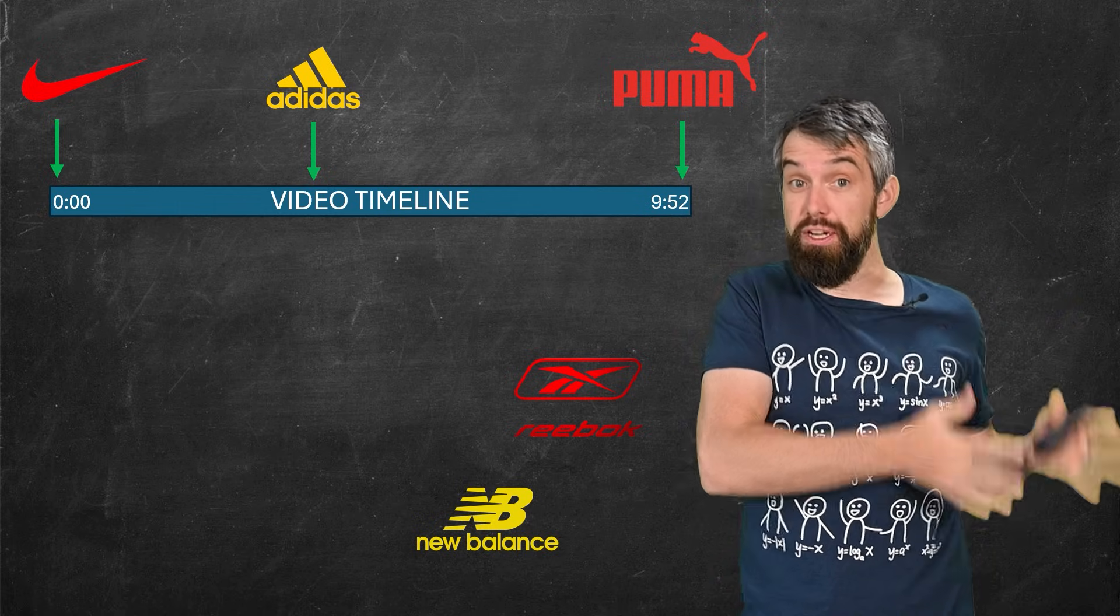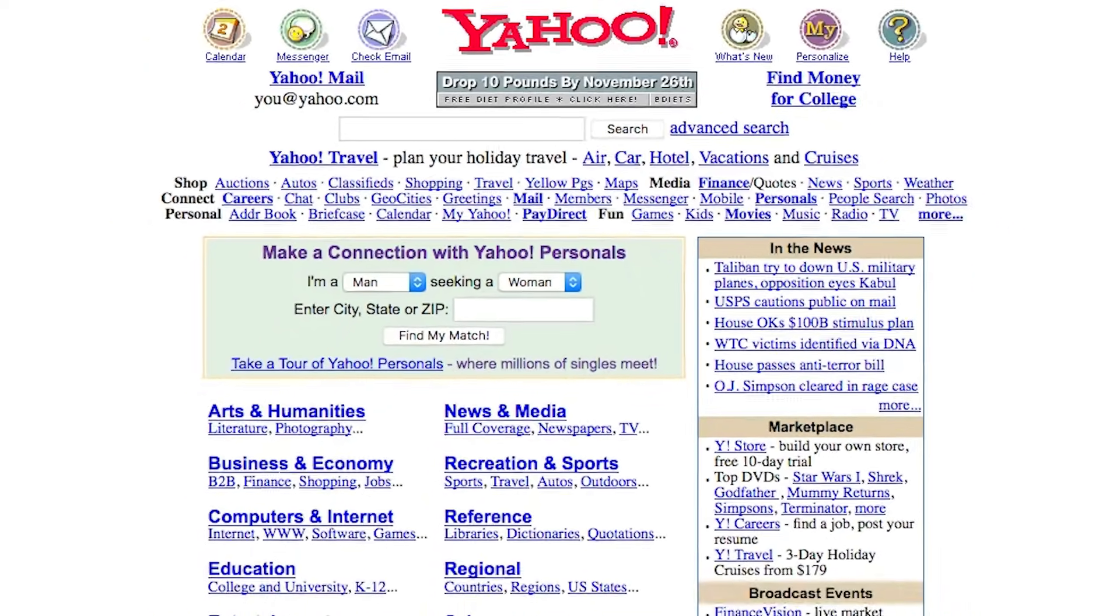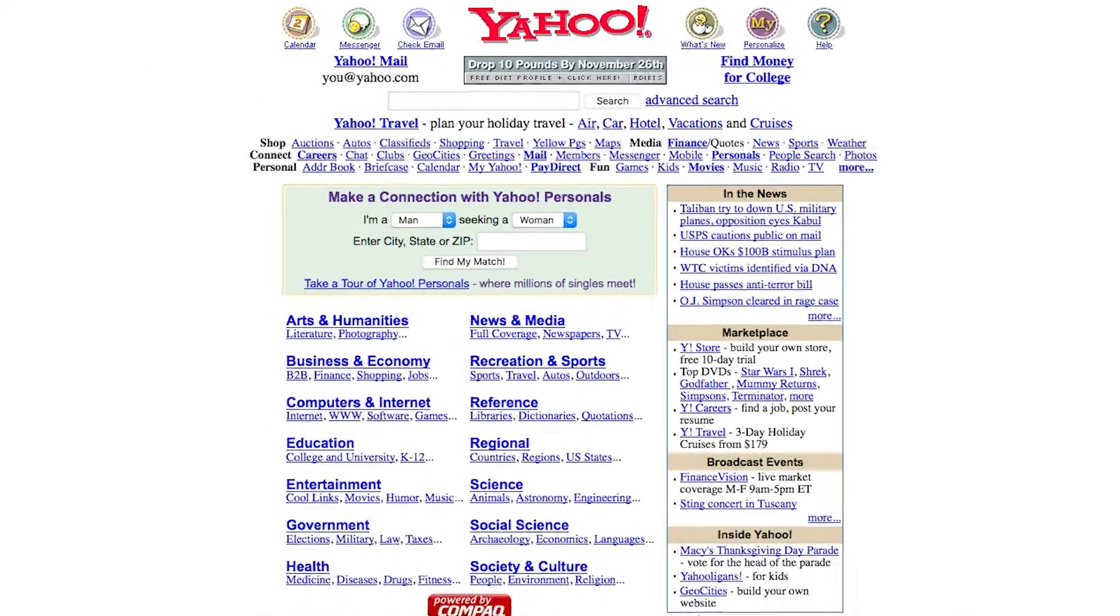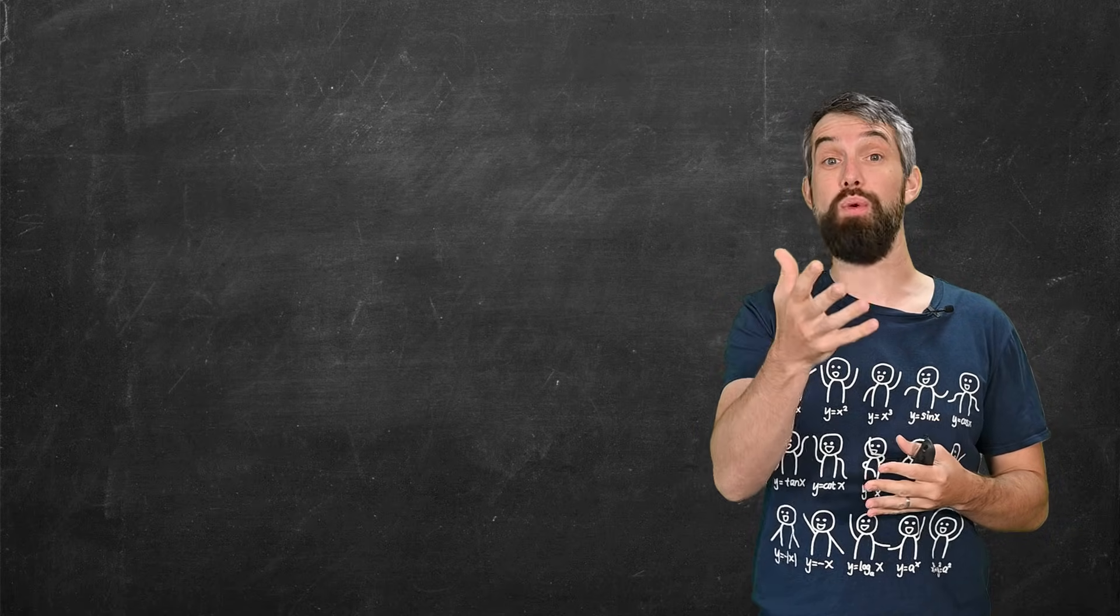To understand what Google did differently, we have to go all the way back to the year 2000, where the king of the internet wasn't Google, it was Yahoo. This is the archaic old Yahoo landing page, the so-called gateway to the internet. And it also printed money primarily through advertising.